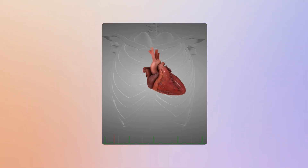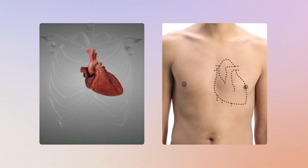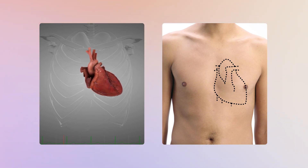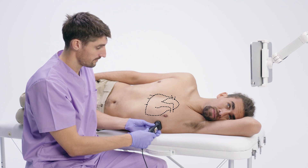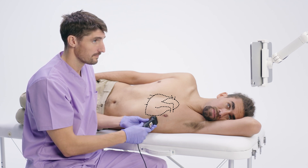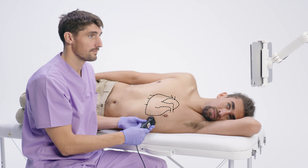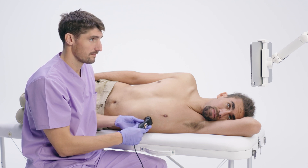The heart is an organ that works as a pump to circulate blood throughout the body. The heart is located on the left side of the chest cavity, slightly oriented downward. It is about one and a half times the size of the patient's fist. When starting a cardiac ultrasound exam, it is important to visualize the heart inside the patient's chest — it will help you find the correct probe position to acquire ultrasound images.